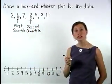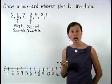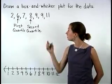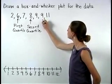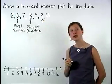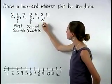Now, let's find the third quartile, or the median for the upper half of the data set. The median will be the middle number, or nine, so the third quartile is nine.